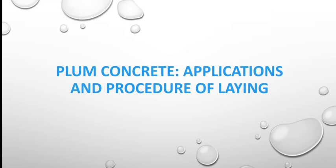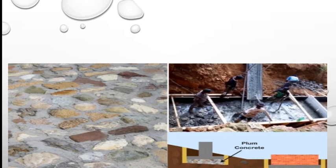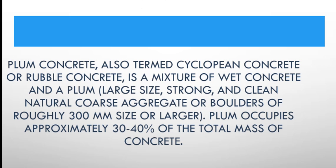Plum Concrete Application and Procedure of Laying. Here you are seeing the Plum Concrete image. Plum Concrete is also termed Cyclopean Concrete or Rubble Concrete. It is a mixture of wet concrete and a plum — that is, large size, strong and clean natural coarse aggregate or boulder of roughly 300 mm size or larger. Plum occupies approximately 30-40% of the total mass of concrete.